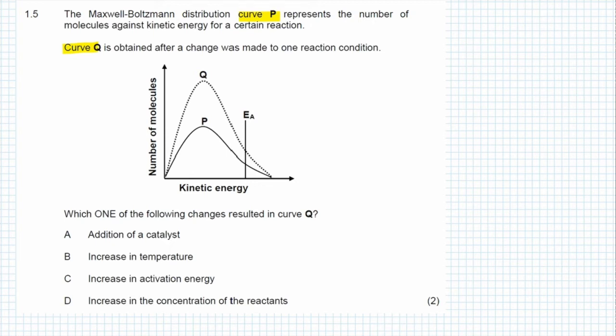Was it A, the addition of a catalyst? When a catalyst is added, the curve itself does not change. Instead the activation energy goes lower because the catalyst provides an alternative route that requires less activation energy to get the reaction started. So A is incorrect.